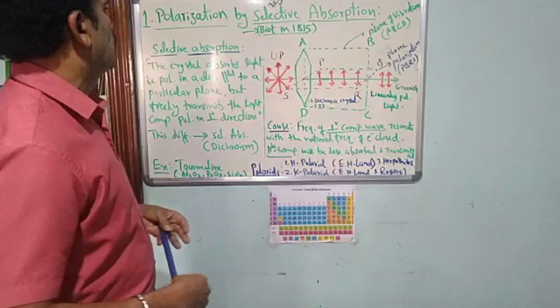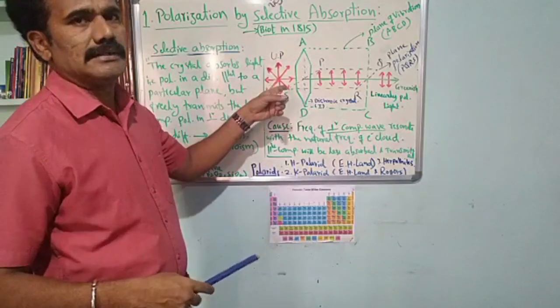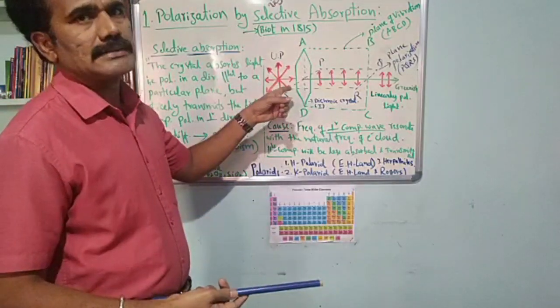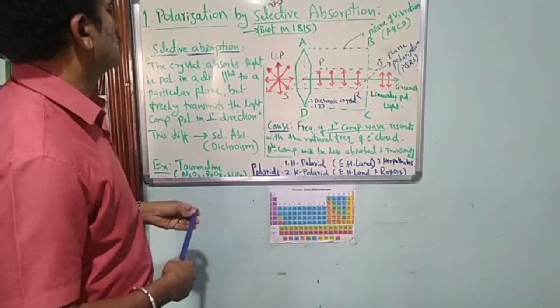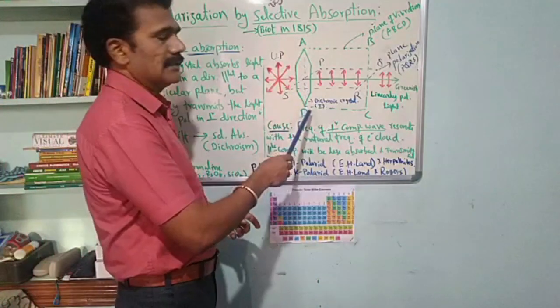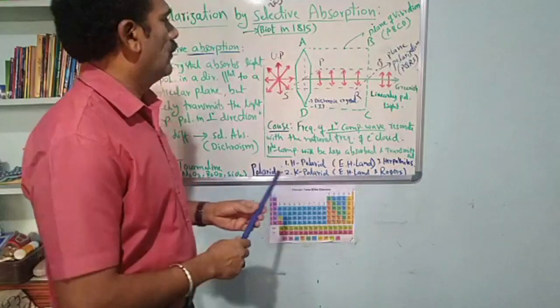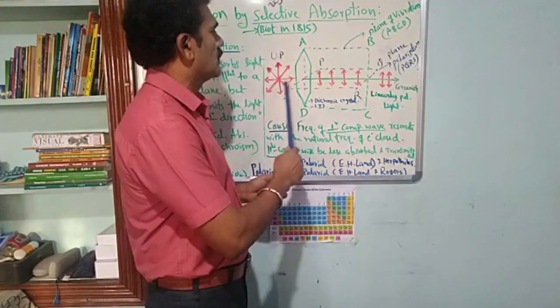When ordinary light, also called unpolarized light, is allowed to pass through a tourmaline crystal, as you know from the previous video,